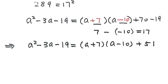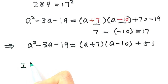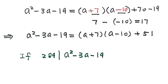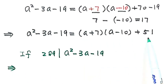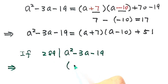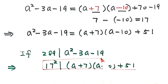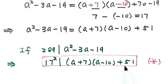Now let's start the proof by contradiction. We assume that a squared minus 3a minus 19 is divisible by 289. That means (a + 7)(a - 10) plus 51 is divisible by 289. Since 289 equals 17 squared, this expression is divisible by 17 squared. We'll mark this result with a star to come back to it.